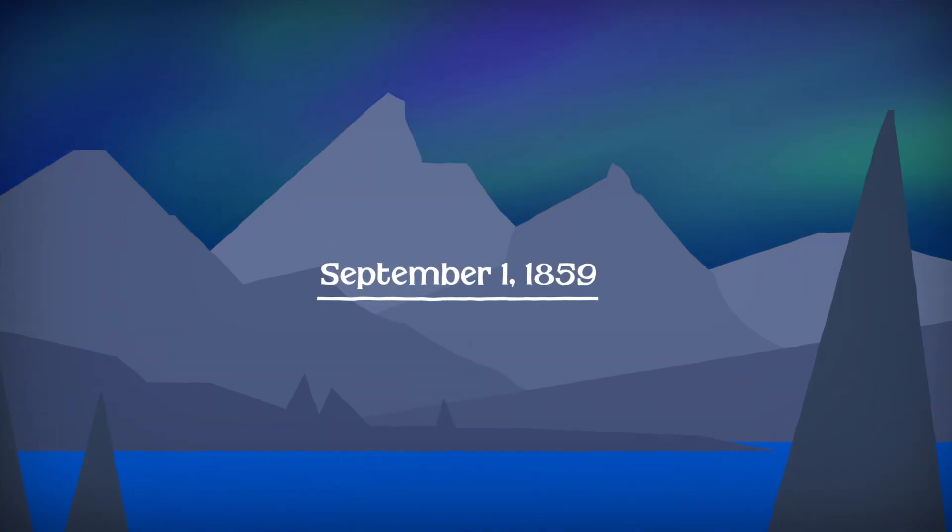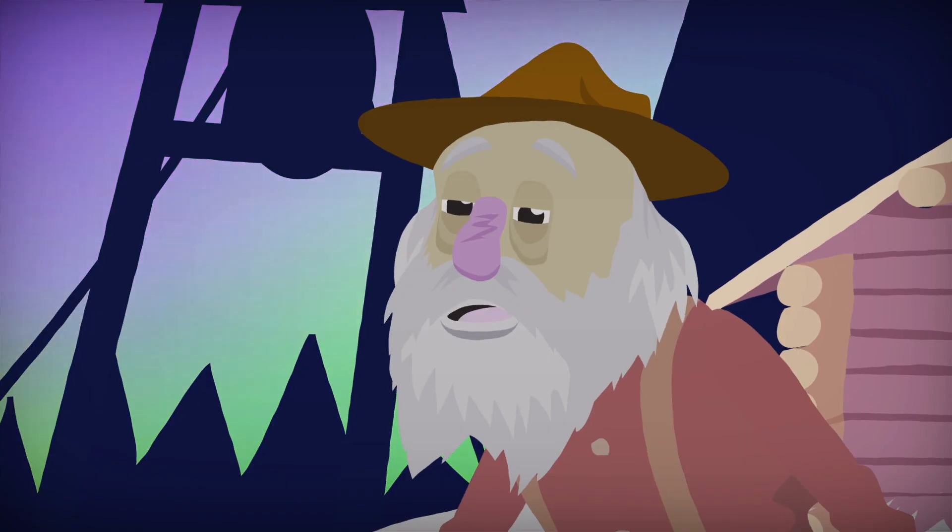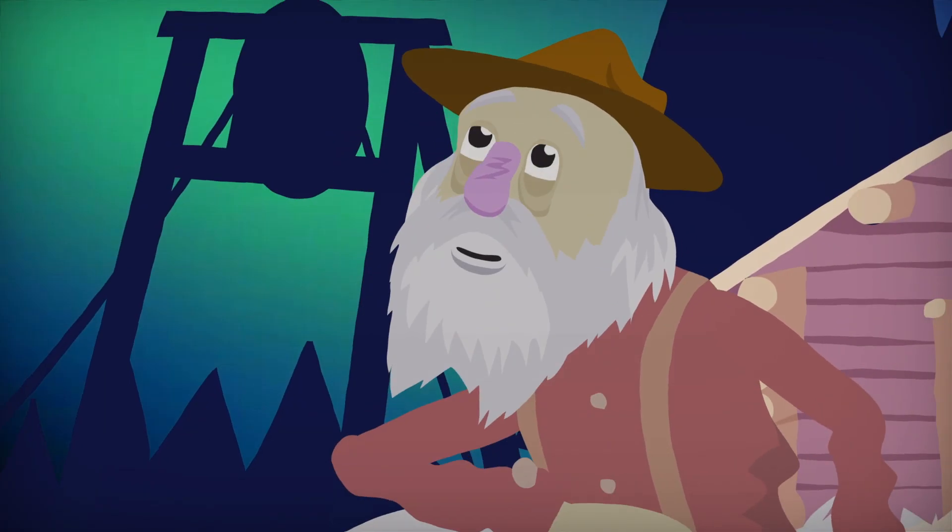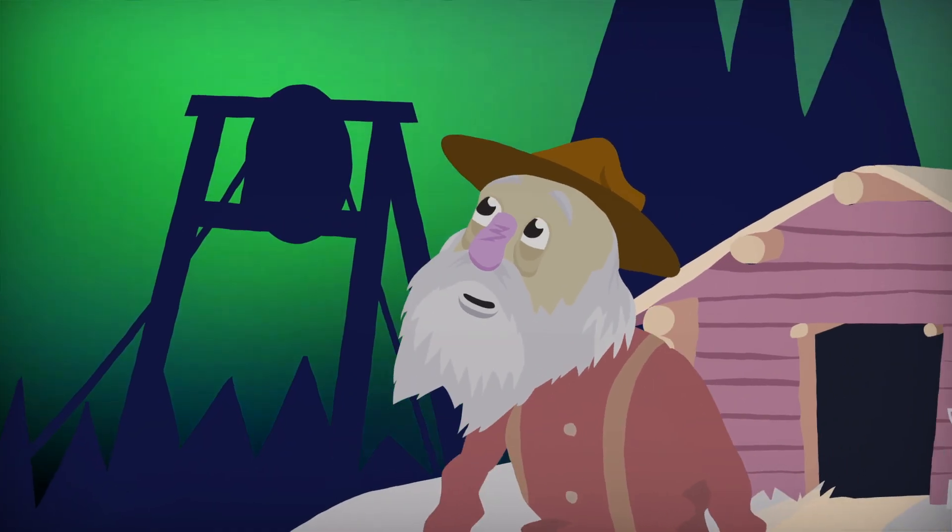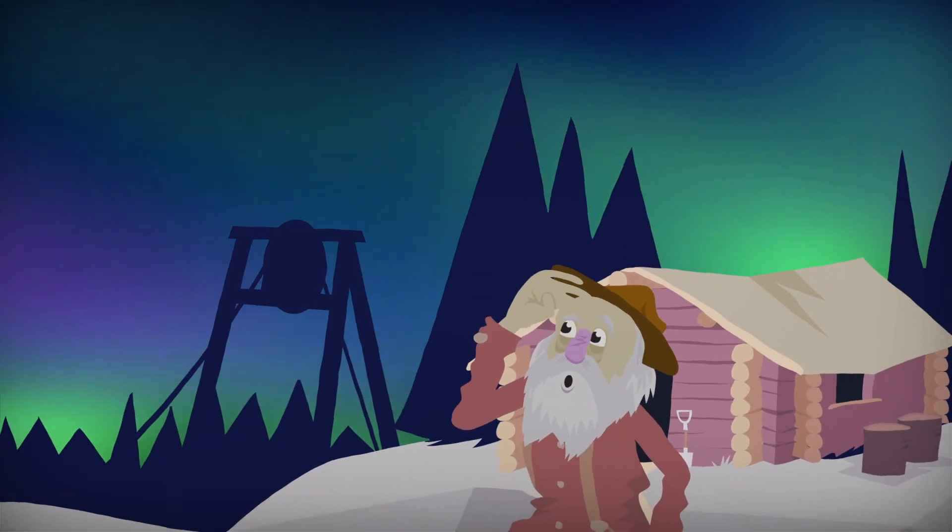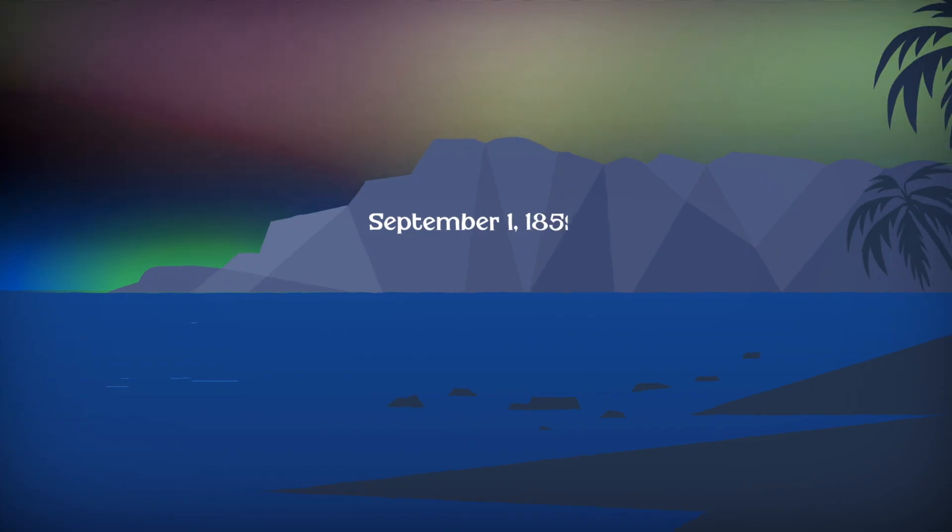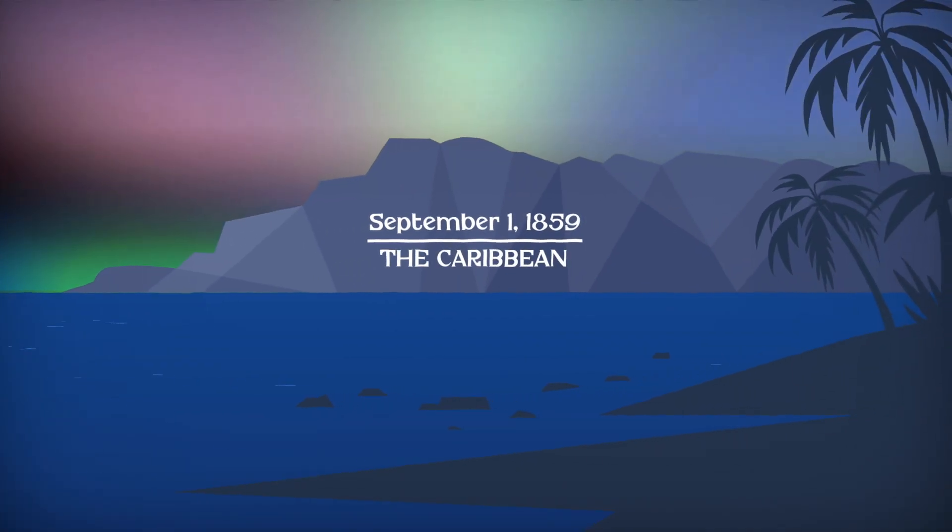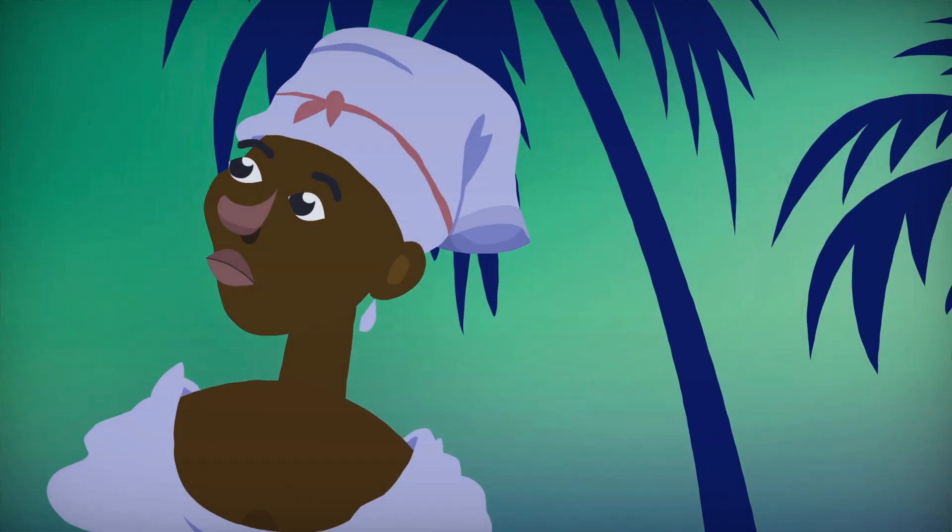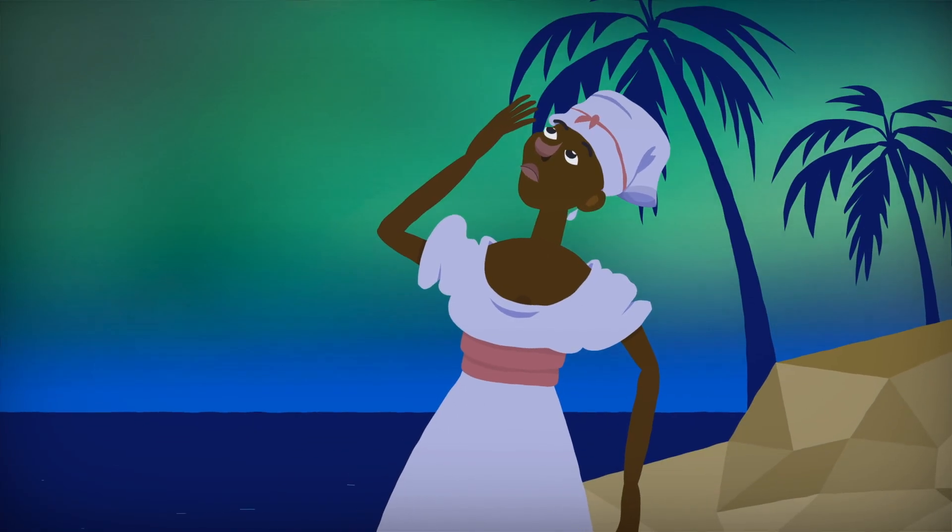On September 1st, 1859, miners following the Colorado Gold Rush woke up to another sunny day. Or so they thought. To their surprise, they soon discovered it was actually 1am, and the sky wasn't lit by the sun, but rather by brilliant drapes of light. The blazing glow could be seen as far as the Caribbean, leading people in many regions to believe that nearby cities had caught fire. But the true cause of what would come to be known as the Carrington event was a solar storm, the largest in recorded history.